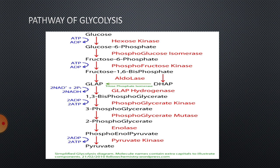The 10 different reactions we can see in glycolysis are: first, phosphorylation; second, isomerization; third, phosphorylation; fourth, cleavage; fifth, isomerization; sixth, oxidation; seventh, dephosphorylation; eighth, intramolecular shift; ninth, dehydration; and the tenth reaction is dephosphorylation. These are the 10 steps we can see in glycolysis.